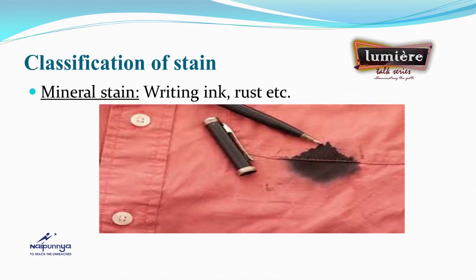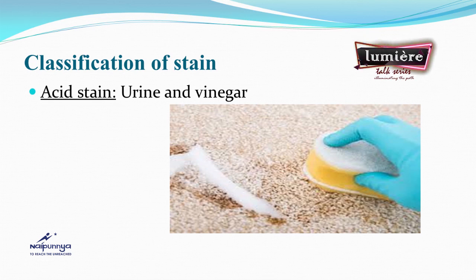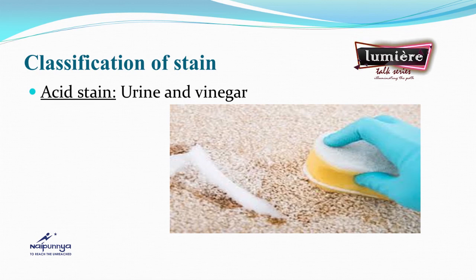Mineral stains are caused by writing ink, medicine, dye stuffs, rust, and so on. Acidic stains include stains such as urine, especially fresh urine, vinegar, and medicines containing nitric acid, and so on.